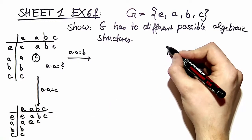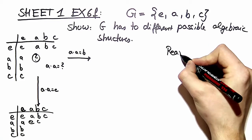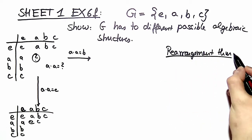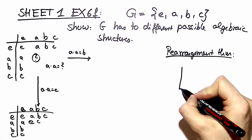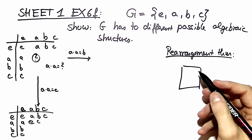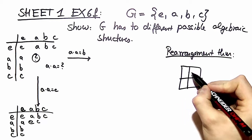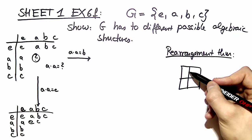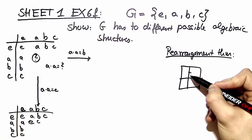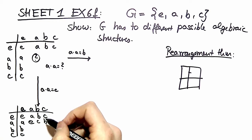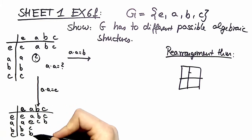I will quickly explain what is the rearrangement theorem. The rearrangement theorem is crucial for this proof. Let's say we have a multiplication table right here and the rearrangement theorem says that in every row or in every column every single element of the group is repeated exactly once and only once. So we can't write a over here because we already wrote a over here. With the same logic we can deduce that here the only possible value to write is b.